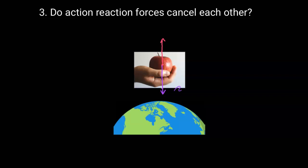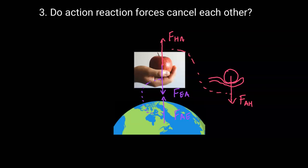We're going to use agent-victim notation. To write this, we label what is pulling on the other object. We have the earth pulling on the apple, labeled F_EA, and the apple pulling up on the earth, labeled F_AE. The other force acting on the apple is the hand pushing the apple up, labeled F_HA, and the reaction force is the apple pushing down on the hand, labeled F_AH. We indicate action-reaction pairs with a dotted line connecting them.